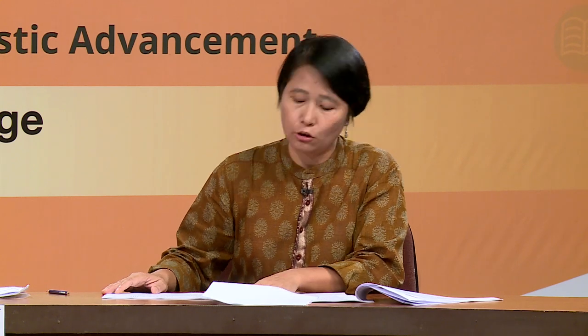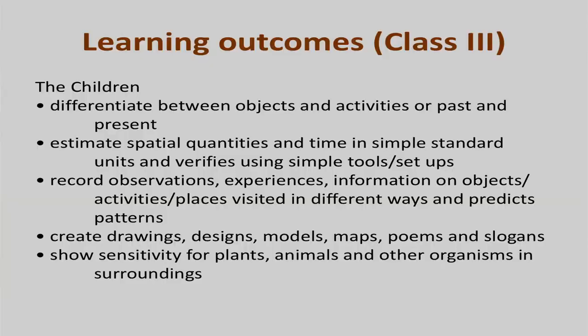For example, the learning outcomes for class three as listed in the document state that children will be able to differentiate between objects and activities of past and present; estimate spatial quantities and time in simple standard units and verify using simple tools; record observations, experiences, and information on objects, activities, or places visited in different ways, and predict patterns; create drawings, designs, models, maps, poems, and slogans; and show sensitivity for plants, animals, and other organisms in their surroundings. If children are able to do all this, we will say that the learning outcomes for class three have been achieved, and we will be able to link this achievement with the curricular expectation for that stage.